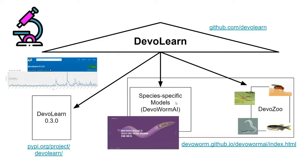Another part of DevoLearn is DevoWorm AI, which provides species-specific machine learning and deep learning models. Here we're interested not in pre-trained models but in models specialized for different types of data. We have one model specialized for C. elegans embryogenesis, another for diatoms, and further models using different techniques for different biological questions. One exciting project is a neural cellular automata model, combining neural networks with cellular automata — a good approach to modeling morphogenesis. You can find DevoWorm AI at devoworm.github.io/DevoWorm-AI.